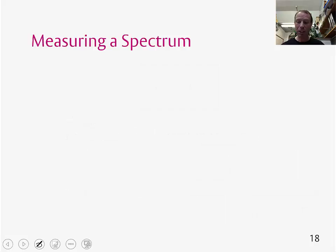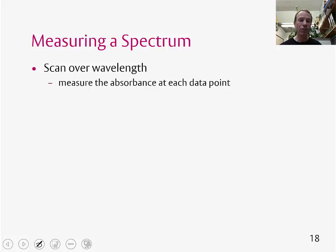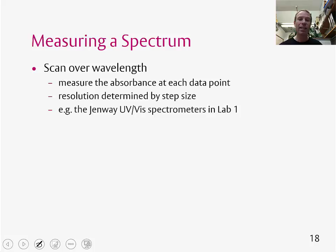Now if you want to measure a spectrum, there are two ways of doing this. One is that you scan over the wavelength, so basically you set up a spectrometer to measure the absorbance, so how much light is being absorbed at a certain wavelength, then you change the wavelength and measure it again. And this will eventually build up to give a spectrum.